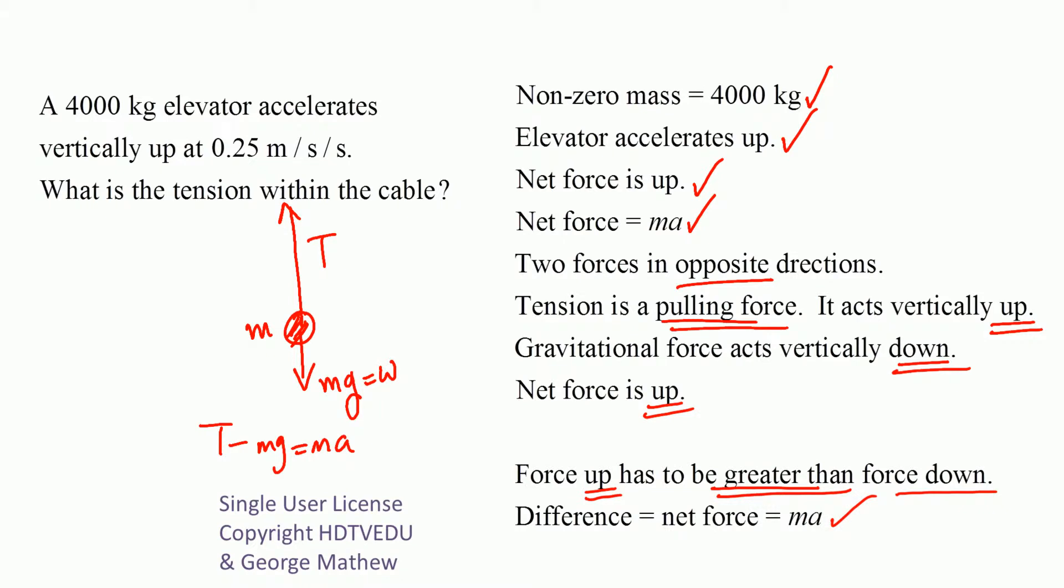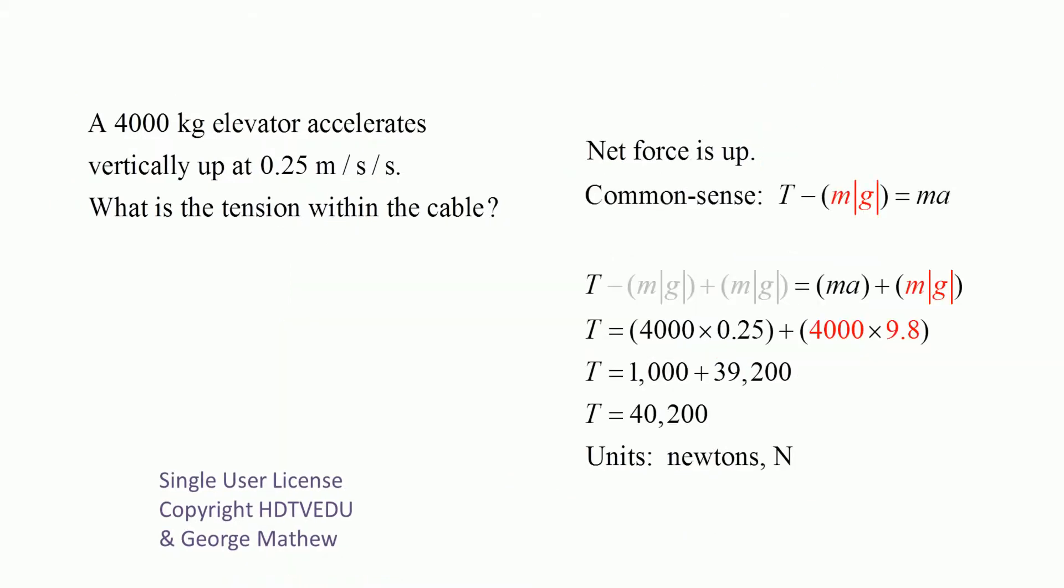So tension minus gravitational force equals Ma. Net force is up. Common sense: bigger force minus smaller force equals net force. Do not forget, we already took into account that gravitational force acts vertically down. Replacing g with negative 9.8 will ruin it because we already accounted for the direction. Bigger force minus smaller force equals net force for two forces in opposite directions.